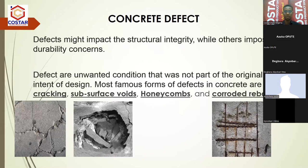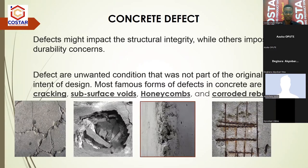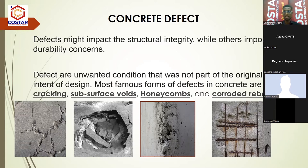There are different types of defects in concrete that can occur for different reasons. One of them is cracking. When concrete is mixed with cement and it hydrates too fast, it can lead to cracking. Not just that — there's what we call differential settlement, whereby the base on which the concrete is cast lacks compaction at some points, which could lead to cracking of blocks and even the concrete itself.